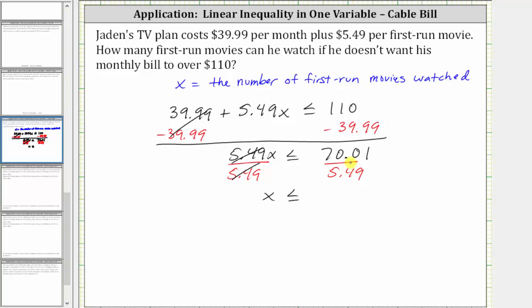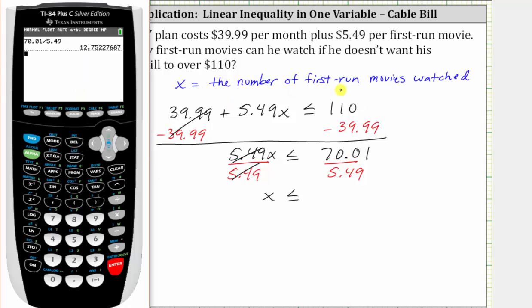Let's find the quotient on the calculator. Now remember, x is the number of first-run movies watched, so we might be thinking we should round up to 13. But if we round up to 13, then the bill is going to be over $110, and therefore we have to round down to 12.